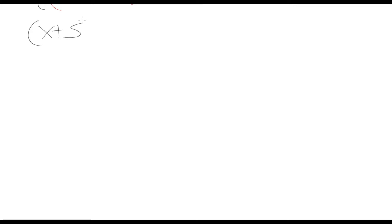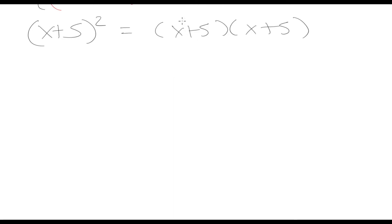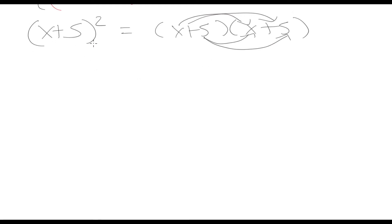Now let's look at another special case: a binomial squared, like x plus 5 squared. You might be tempted to expand this the long way by multiplying each term by each term. While that gives the correct answer, it can take some time. There's actually a shortcut you can use when squaring a binomial to get to the answer a lot faster.